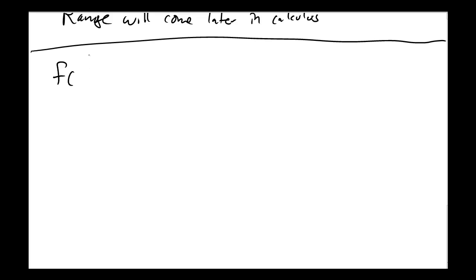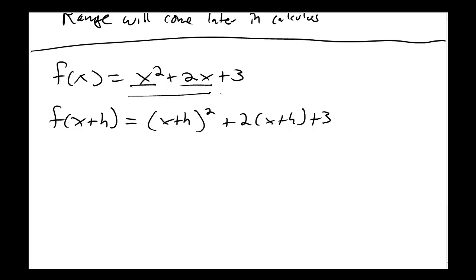Functions take inputs, and we often think of those inputs as numbers, but they don't have to be. I can input letters into my function. And if I input letters into my function, this function takes an input x, it squares it, it multiplies it by 2, it adds them both together, and finally it adds 3. So now into this function I'm plugging in x plus h. So I square it, I multiply it by 2, I add them both together, and then add 3.